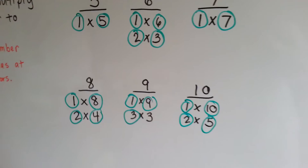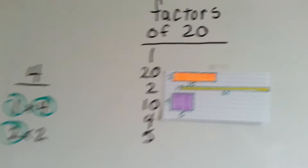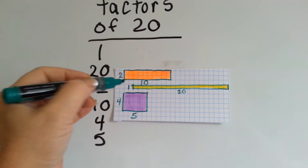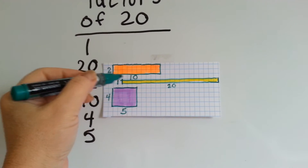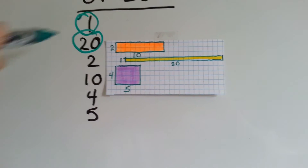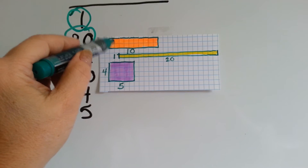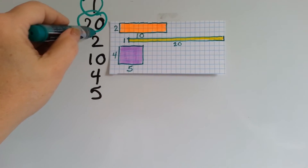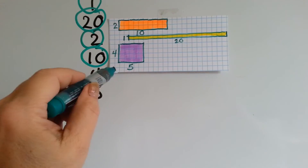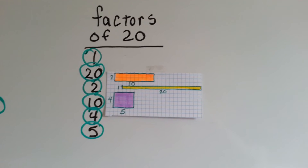So we can model these in an array of modeled squares, like this. If we wanted to do the factors of 20, we could do 1 times 20 squares — we've got 1 square going this way and 20 going that way, so we've got 1 and 20. We could do 2 times 10 — 2 going this way and 10 going this way, and that makes 20. We can also do 4 going this way and 5 going this way, and 4 times 5 makes 20. So those are factors of 20.